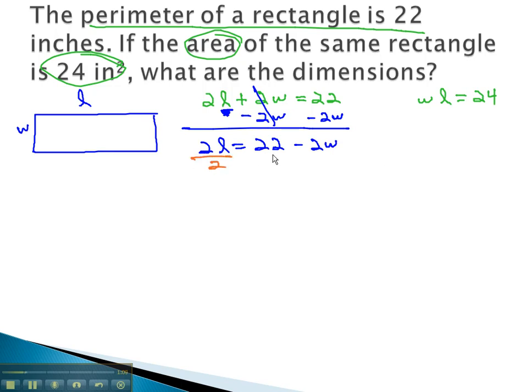Finally, to get the L alone, we'll divide both sides by 2. And when we divide each and every term by 2, we get 11 minus W for our value for L.